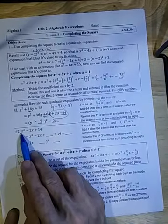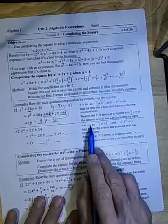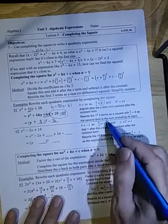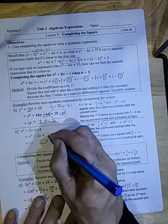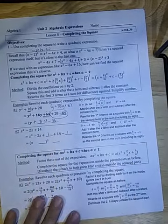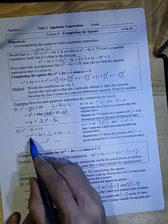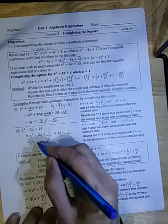For the next one again, we have a 1, so we're going to take the minus 2 and divide by 2 to get minus 1. Then we're going to square that and get a positive 1, so that's what we're going to add here and subtract after the constant. The first three terms we're going to rewrite.